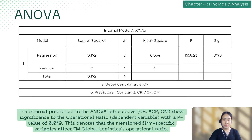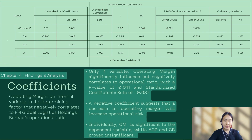For ANOVA, model one also proved to be the most significant, with a p-value of 0.019, indicating that firm-specific variables — current ratio, average collection period, and operating margin — affect the company's operational ratio. According to the coefficients table, only model one is significant to the dependent variable. One variable significantly influences but negatively correlates to operational ratio: operating margin, with a p-value of 0.011 and a standardized beta coefficient of −0.987. When tested individually, operating margin is significant, while average collection period and current ratio are not.